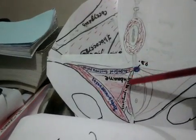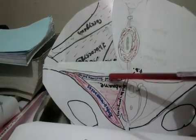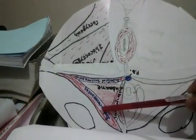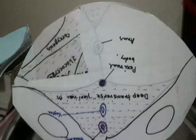The superficial perineal pouch is the space between Colles' fascia and the perineal membrane. This space contains three paired muscles: bulbospongiosus, superficial transverse perineal, and ischiocavernosus. If we remove this layer, we find the perineal membrane. If we remove the perineal membrane, we find the urogenital diaphragm, formed by the deep transverse perineal muscle and the sphincter urethrae.